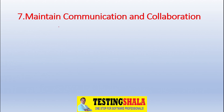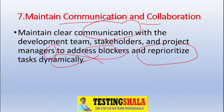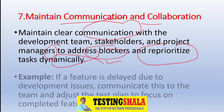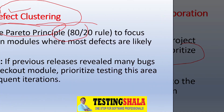The seventh important aspect is maintaining proper communication and collaboration with all stakeholders. To deliver a software testing project quickly, you need regular communication with stakeholders and the project manager to address blockers and redistribute tasks dynamically. For example, if a feature is delayed due to development issues, communicate this with the team and adjust the test plan — this helps manage delivery within a tight schedule.